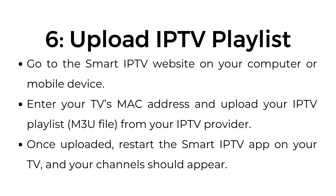Go to the Smart IPTV website on your computer or mobile device. Enter your TV's MAC address and upload your IPTV playlist (M3U file) from your IPTV provider. Once uploaded, restart the Smart IPTV app on your TV and your channels should appear.